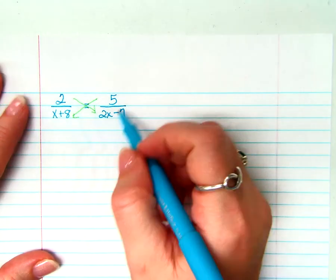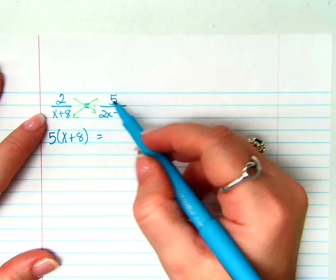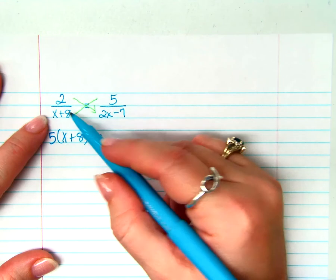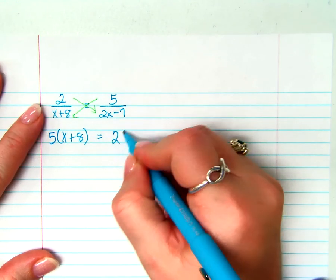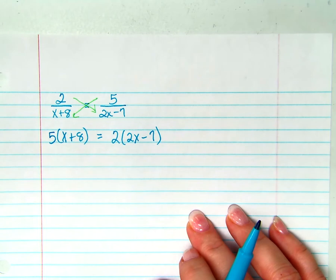When we do this, we get 5 times x plus 8 equals, because that was this one, right? Now we need this one, 2 times 2x minus 1. Well, this kind of equation you've been doing for a long time, and it's something that you're comfortable with.